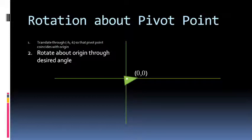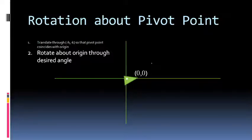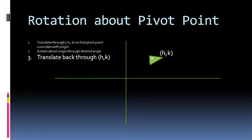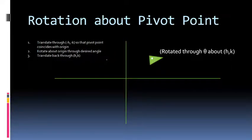After rotation you get the rotated triangle. In the third step, we move the triangle back to its original position. For this we translate in such a direction that the pivot point moves h distance horizontally and k distance vertically. Your triangle will shift back to its final position. So this is a translation back to the original position with translation parameters h and k. After performing these three steps, you have rotated the triangle through theta degrees about the pivot point hk.